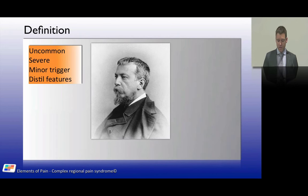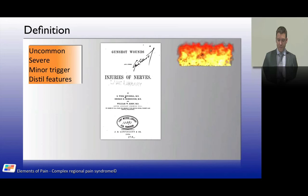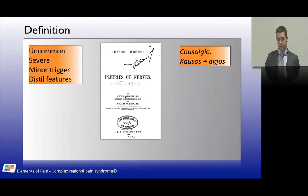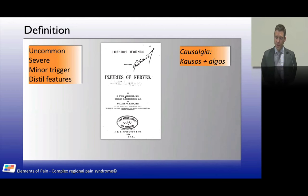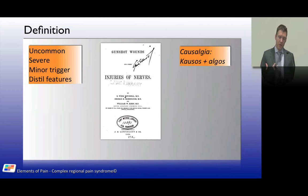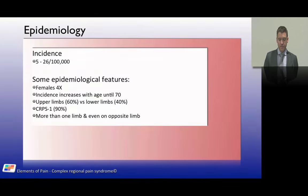CRPS was first described in 1864 by Silas Mitchell during the American Civil War. His famous paper, 'Gunshot Wounds and Other Injuries of Nerves,' is where he first mentioned the term causalgia and described caring for someone with complex regional pain syndrome. Causalgia combines two words — 'causus' meaning burning and 'algos' meaning pain — so it's a burning pain.